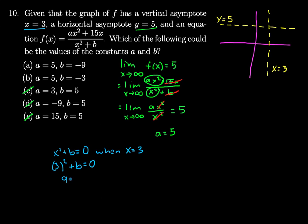3 squared gives me 9. Subtracting 9 from both sides, we get that b must equal negative 9. That means our answer to this question is a, because we need a equals 5 to give a horizontal asymptote at y equals 5, and we need b equals negative 9 so we get a 0 in the denominator, which causes our limits to go off to positive or negative infinity as we get close to x equals 3.